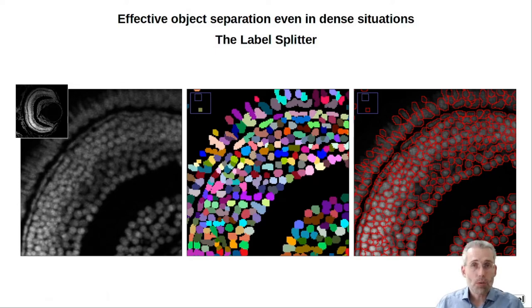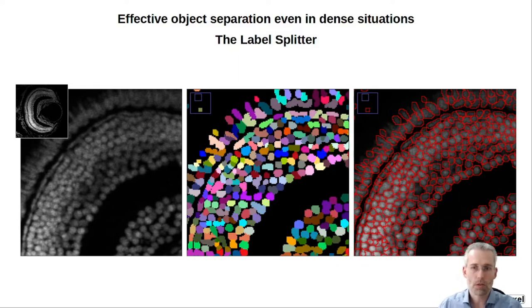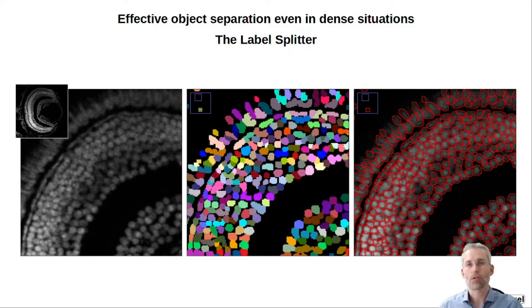It also performs extremely well in very dense environments. We see here that it can separate objects where standard methods like the watershed will have some difficult times. In some situations this label splitting is actually available in the toolbox as a separate tool and can be applied to already extracted binary objects, or is part of the Voronoi Threshold Labeler.